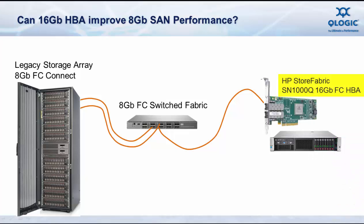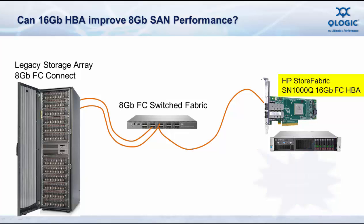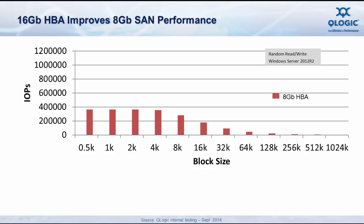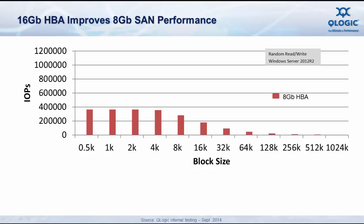What happens if we utilize the latest Gen5 16GB Fibre Channel adapters in the Gen9 server instead? Here are the results of some tests that we ran for this scenario. In our test, we used a DL380P running Windows 2012 R2 with an 82Q Fibre Channel HBA. This was connected to an 8GB Fibre Channel SAN fabric using the HP StoreFabric 3000B Fibre Channel switch. To eliminate disk performance from impacting our test results and allow us to look only at the server and adapter performance contribution, we used an SSD disk system with eight 4GB Fibre Channel connections as our storage device. Then we ran random read-write operations using Iometer to look at the IOP and bandwidth performance of the overall system.